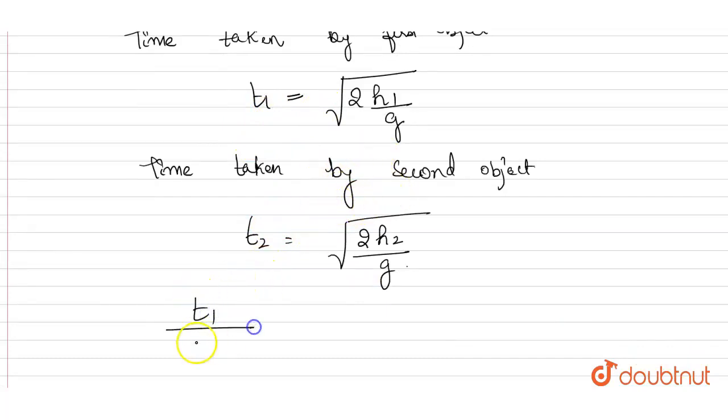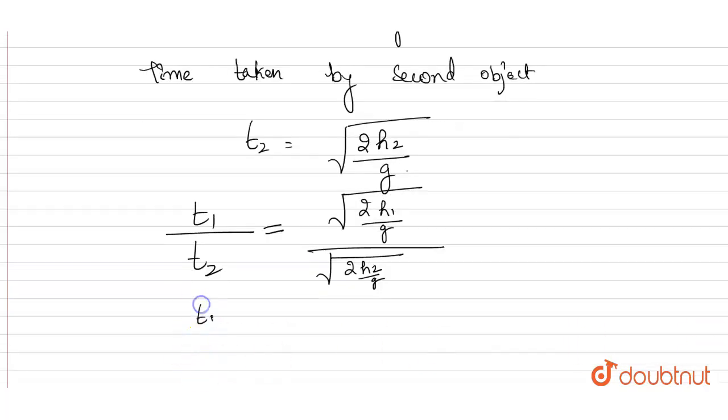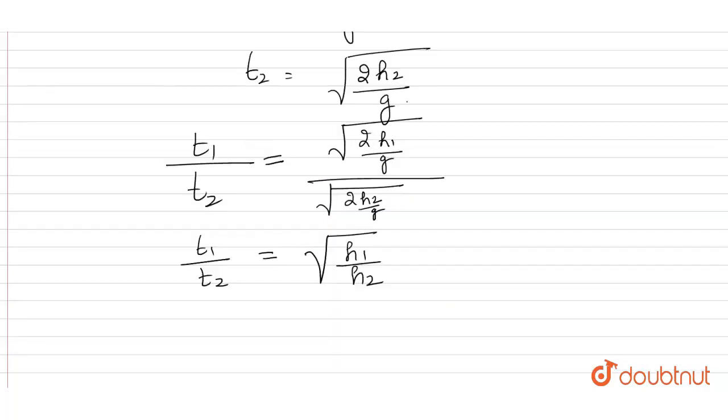Now that we see, t1/t2 will be equal to, placing these values, √(2h1/g) divided by √(2h2/g). This will be equal to t1/t2 = everything gets cancelled, only √(h1/h2) will be left. So we see t1/t2, the ratio of the time taken, will be √(h1/h2).